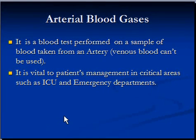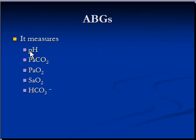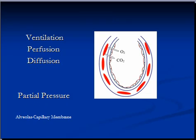Today's topic is arterial blood gases. It is a blood test performed on a sample of blood taken from an artery; venous blood cannot be used. It is vital to patient management in critical areas such as ICU and emergency departments. It measures pH, partial pressure of carbon dioxide, partial pressure of oxygen, oxygen saturation, and bicarbonate.